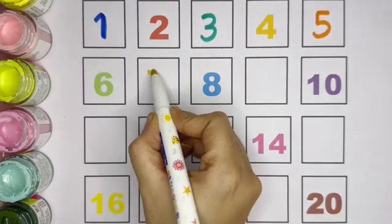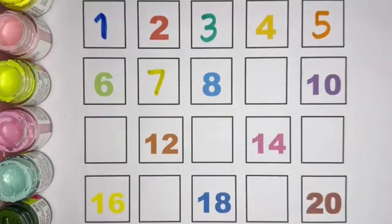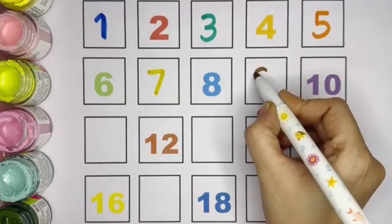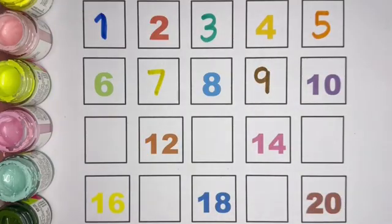6, 7. Number missing is 7. 8, after 8, 9. Missing number is 9. 9, 10.